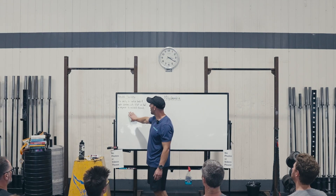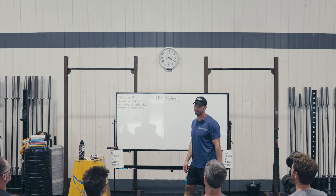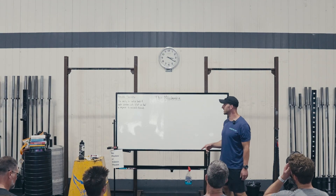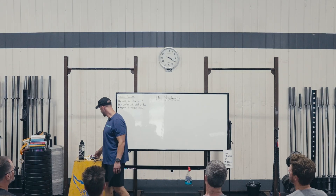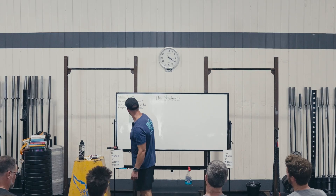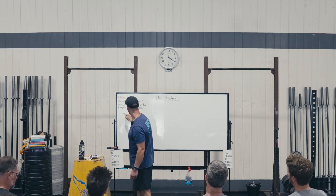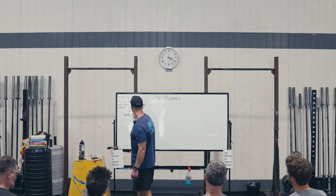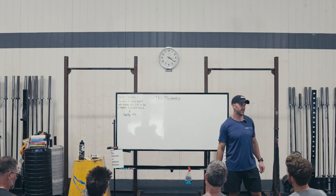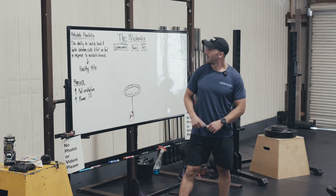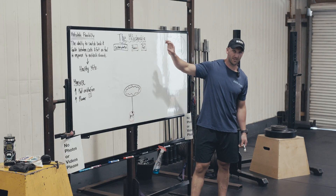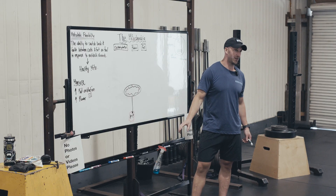If we take it back to the model of metabolic flexibility — the ability to switch back and forth between carbs and fat as a fuel source in response to metabolic demands — what we're saying is that if you are metabolically flexible, that's going to lead to healthy mitochondria. The job of the mitochondria is to take these substrates, the things that we're eating, and turn them into energy.